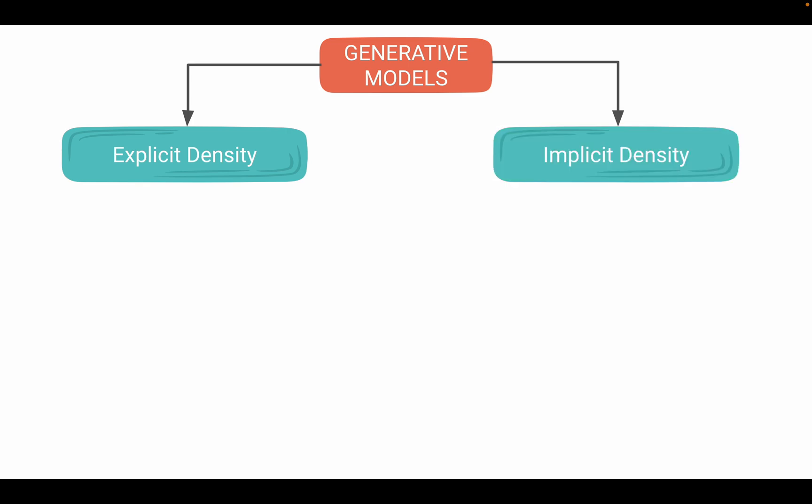Now if we look at the explicit density models, we have two types of models in explicit density. They are approximate density models.